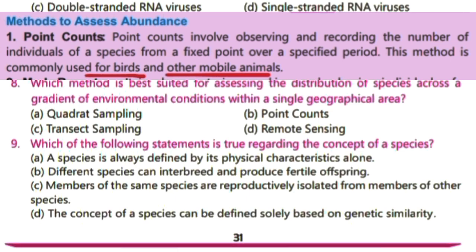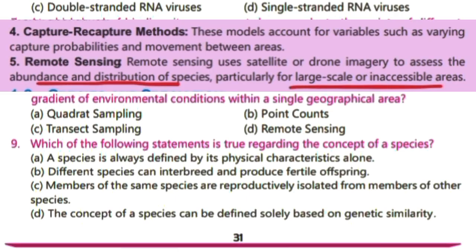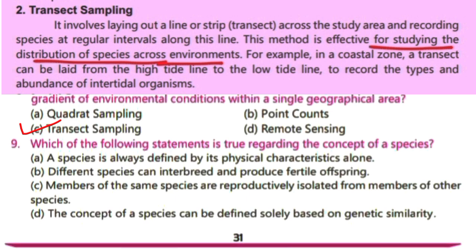In point counts, we record the number of individuals of a species from a fixed point over a specified period of time. Remote sensing is used to assess abundance of species for large-scale or inaccessible areas using satellite or drone imagery. Transect sampling is used to study distribution of species across environments — it involves laying out a line or strip (transect) across the study area and recording species at regular intervals along this line.